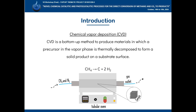To use methane as a carbon source, chemical vapor deposition is employed. This is a bottom-up method to produce materials in which a precursor in the vapor phase is thermally decomposed to form a solid product on a substrate surface.